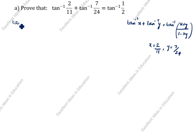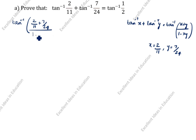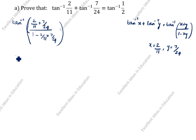What is x in this case? x is equal to 2 by 11, and y is equal to 7 by 24. So we will apply the formula: tan inverse of x is 2 by 11, and y is 7 by 24, divided by 1 minus 2 by 11 into 7 by 24. We will simplify this.